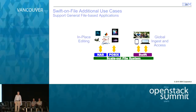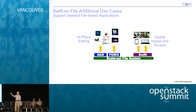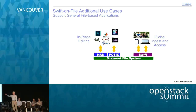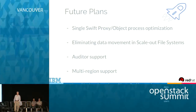The next use case is allowing editing and processing in place for file-based applications. Video transcoding is an example: whether it's a video from your phone, pictures, or TV show footage, you have the data in Swift and want to make it available for processing without moving it. With Swift on file, your editing applications can access the data, make edits, and when done, publish back through the Swift interface.